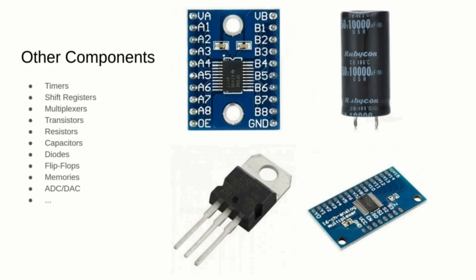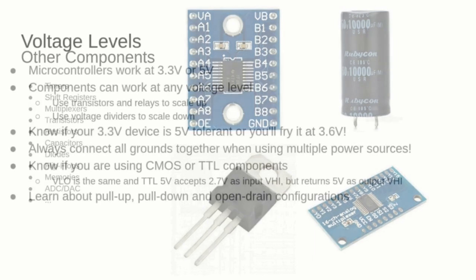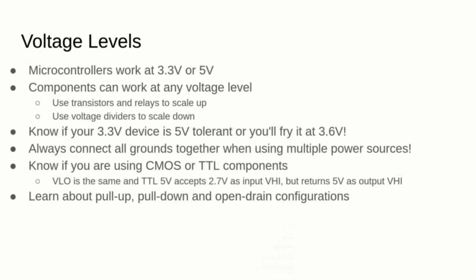Finally, there are many other components used to make the previous ones interconnect. Timers are used to offload some work from the microcontroller and they can control external components or send back interrupts. Shift registers are often used together with analog-to-digital converters. Multiplexers allow you to expand the GPIO pinout by reading or writing at different time slices. Transistors are useful to control components with a higher voltage. Resistors help limit currents to components with lower tolerance. Capacitors help stabilize currents and diodes help prevent current from flowing in the wrong direction. Flip-flops and memory can be used to buffer I/O. Be aware there are plenty more components to use with your microcontroller.